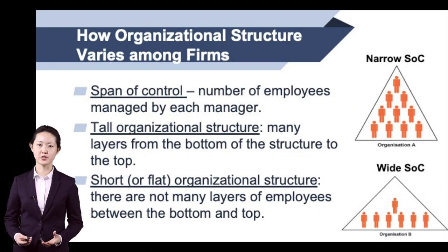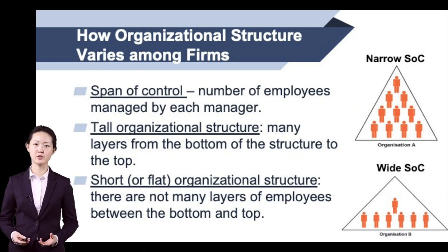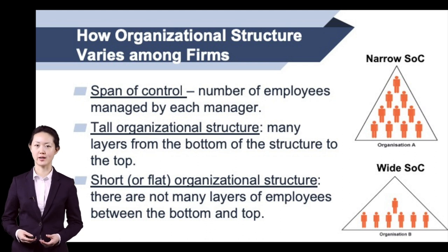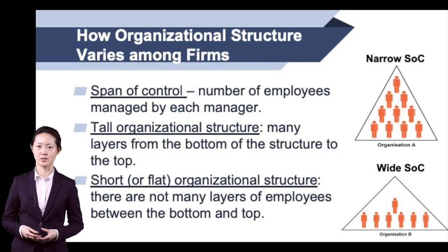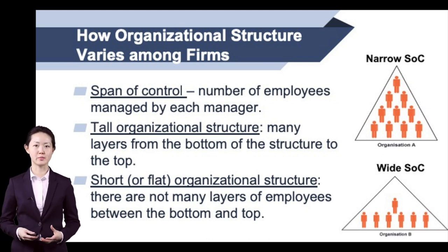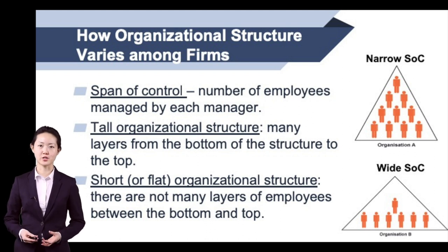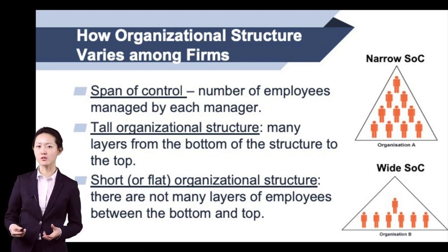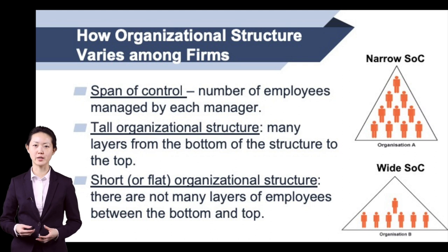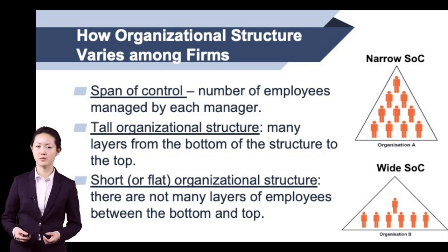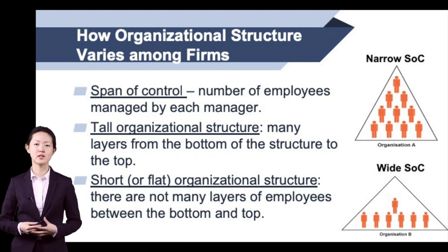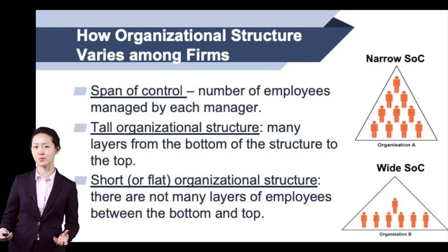Organizational structures vary according to the span of control and also organizational height. Top management determines the span of control within the organization, that is the number of employees that report to a single manager. When the organizational structure is designed so that only few employees report to a single manager, it has a narrow span of control. Conversely, when the organization structure is designed so that each manager supervises numerous employees, it has wide span of control.